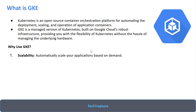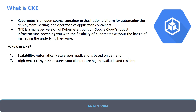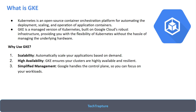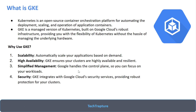The advantages of using GKE include: Scalability — it automatically scales your application based on demand, scaling up to 20, 50, or 100 nodes under high load and scaling down when there's no load. High availability — in case of a zone failure, your cluster runs in another zone. Simplified management — Google handles the control plane so you focus on your workload. Security — GKE provides built-in security options including binary authorization, networking, and firewall configurations.